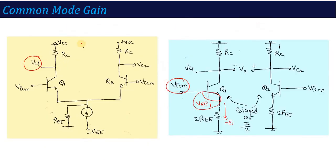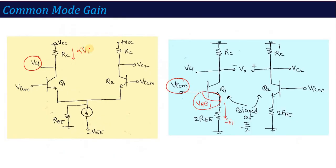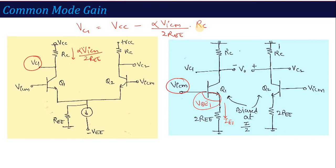Now I calculate the output voltage VC1. The IC current flowing is alpha into VICM divided by 2REE. So VC1 equals VCC minus the voltage drop, and this drop equals alpha times VICM divided by 2REE, multiplied by RC. Since VCC is grounded for signal analysis, VCC equals zero. Therefore VC1 equals minus of alpha into VICM divided by 2REE, multiplied by RC. This is the value of VC1. Similarly, VC2 can be derived on the same basis.